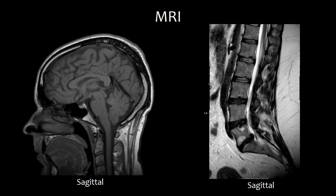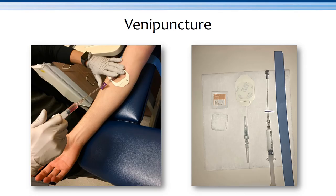The following images are a sagittal view of the brain and a sagittal view of the lumbar spine. Many CT and MRI exams require an intravenous injection of contrast material to highlight and distinguish between similar tissues. It is important to verify patients' allergies and review screening forms. Prior to starting an IV, it is critical to obtain all necessary supplies and perform hand hygiene.